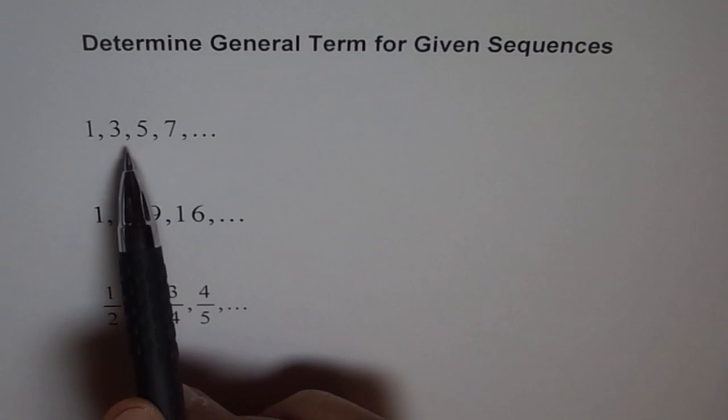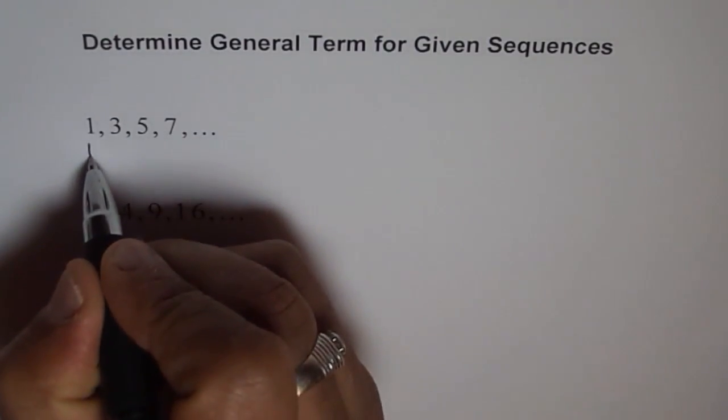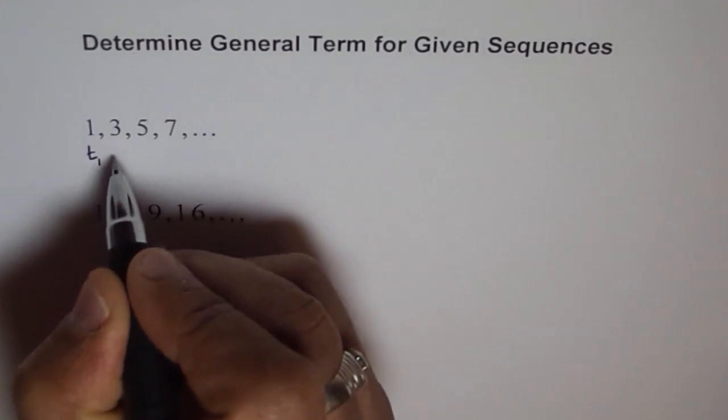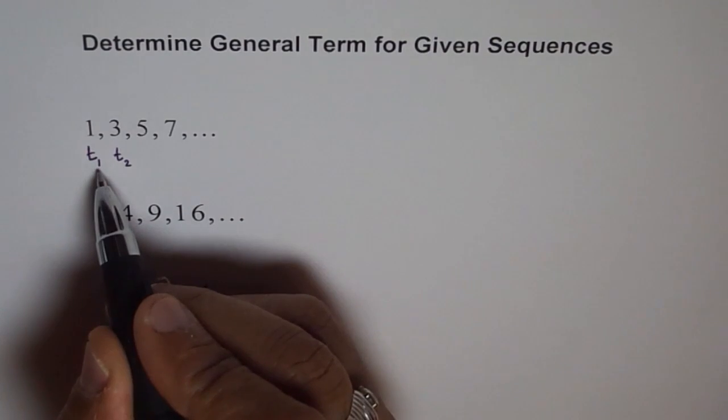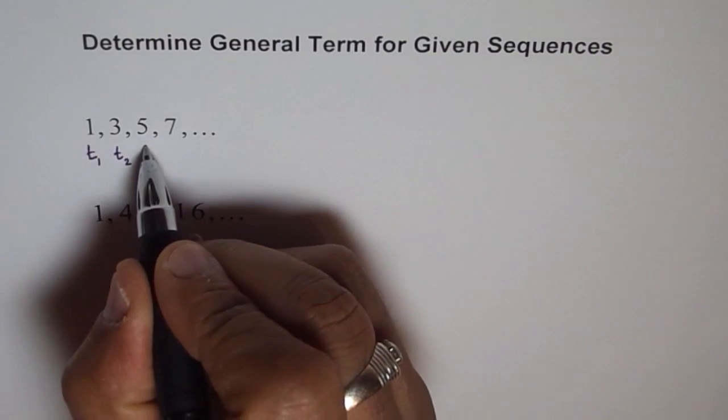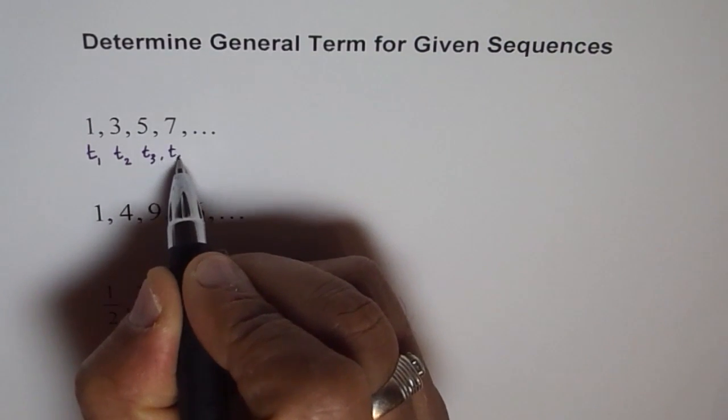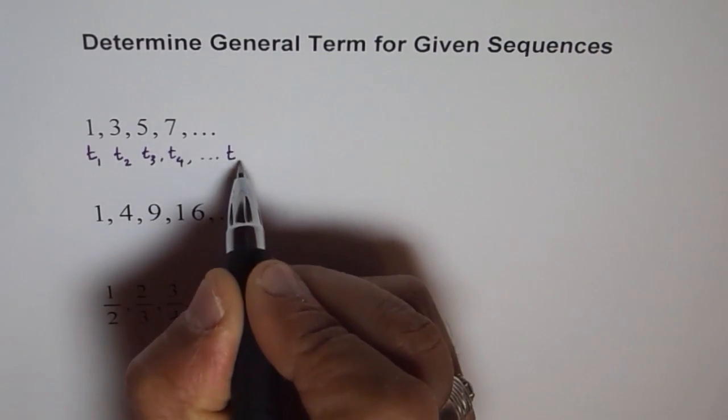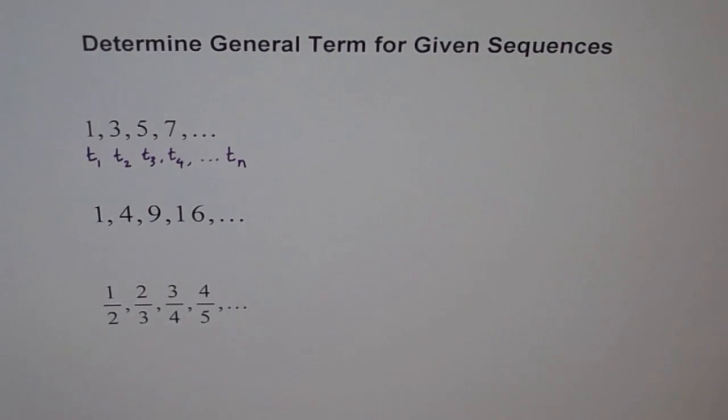These numbers 1, 3, 5, 7 are called the term value. Normally what happens, how we write it or represent it, we write this as first term T1 and this as T2, second term. T is the term and this subscript tells us nth term in general.